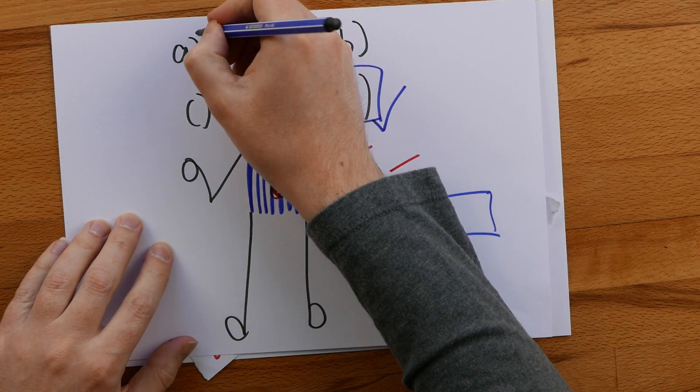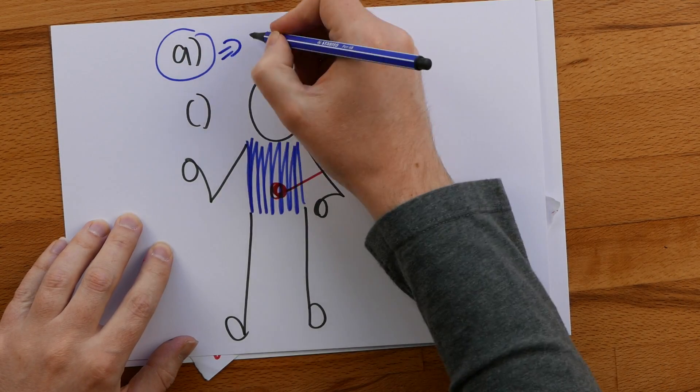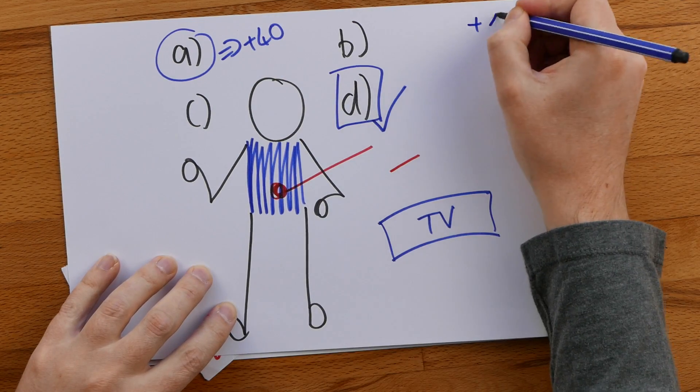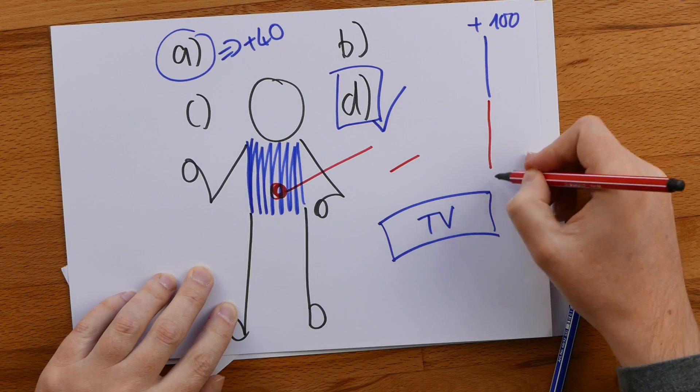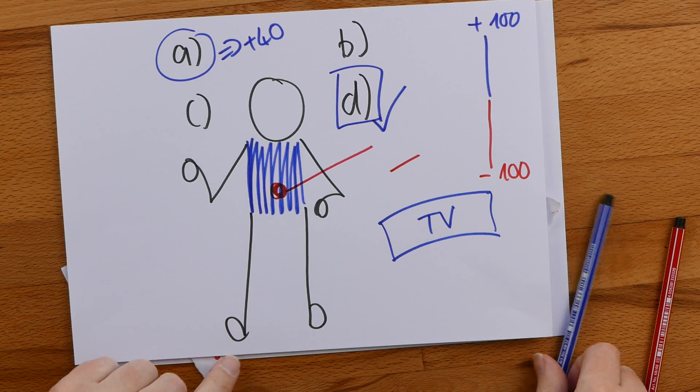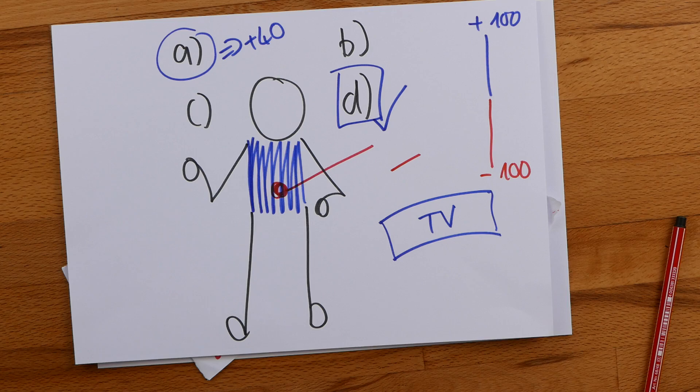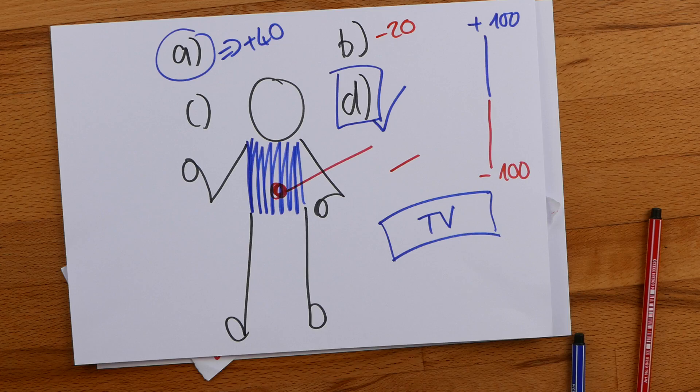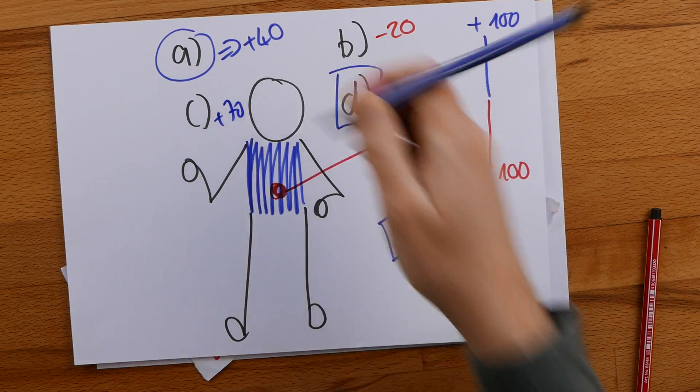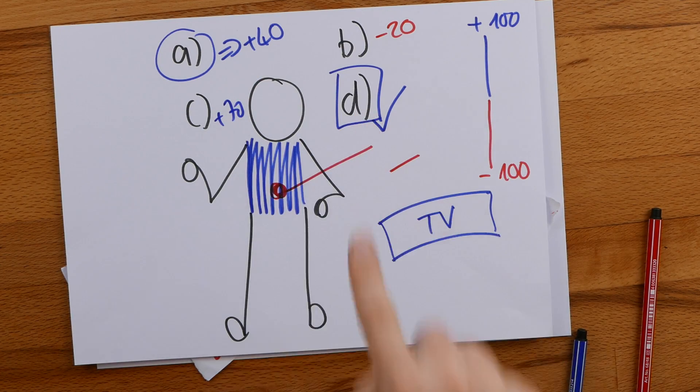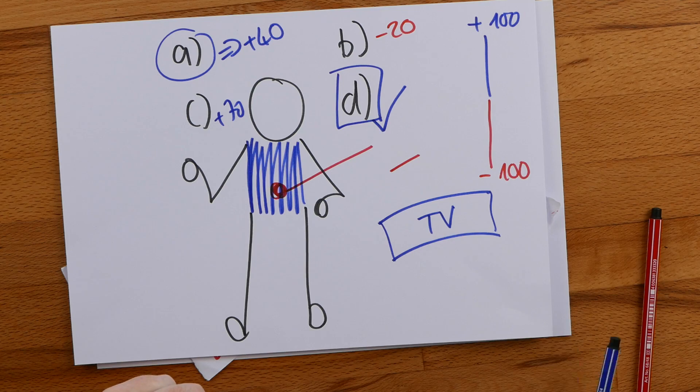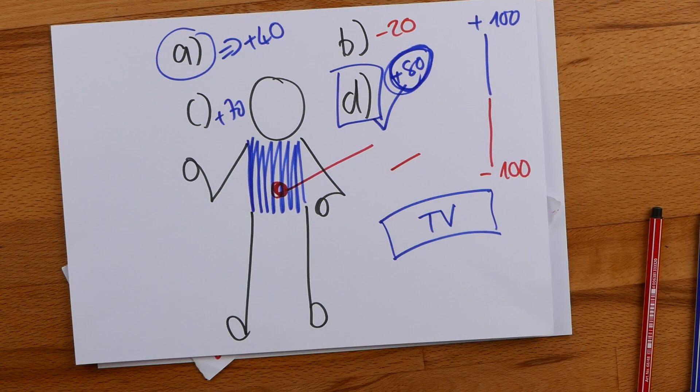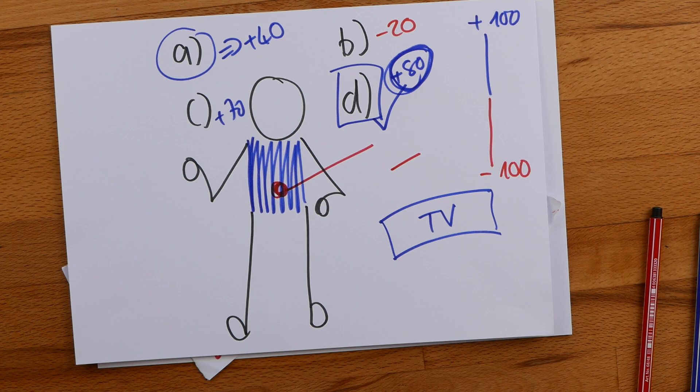So if that was option A, the brain would give it a plus 40 on a scale of plus 100 to minus 100. And it will do exactly the same thing for all of the other options. Maybe option B will get minus 20. Option C will get plus 70. And option D, that was the one that we really liked, we had the gut feeling for, that is a plus 80. And that makes it the most attractive decision for the brain.